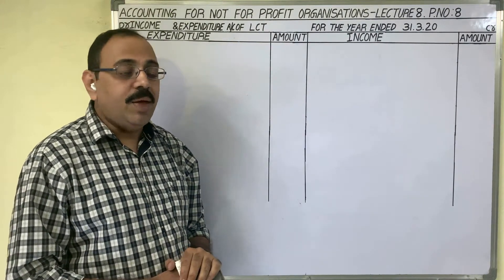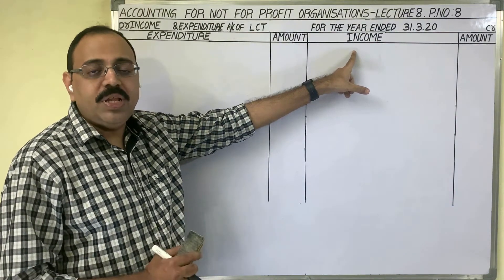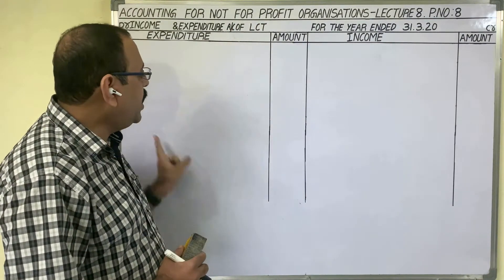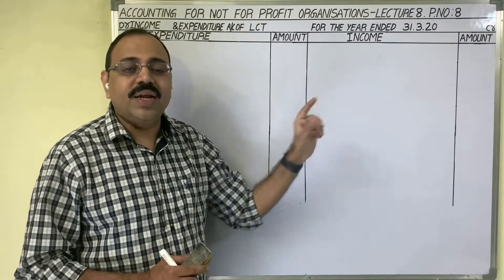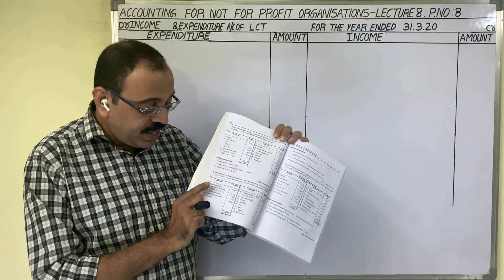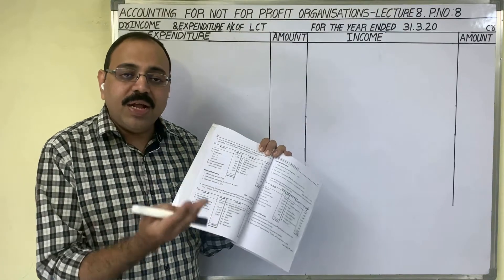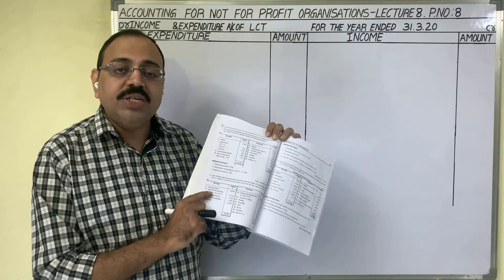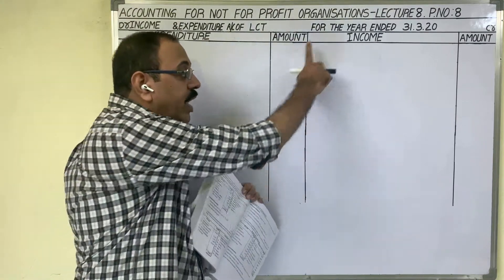The nominal account rule is: debit all expenses and losses, credit all incomes and gains. So organization-related expenses and losses go on the debit side, and incomes and gains go on the credit side. In the receipts and payments account, the debit side shows receipts and the credit side shows payments. Receipts are of two types: capital receipts and revenue receipts. In the income and expenditure account, only revenue receipts go on the credit side.